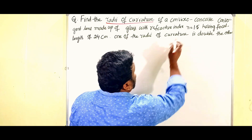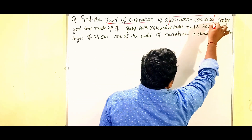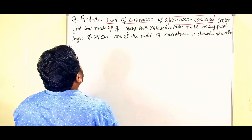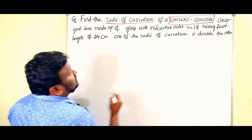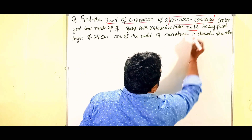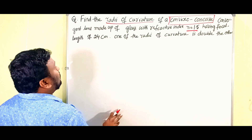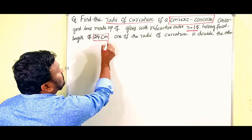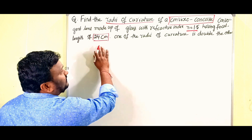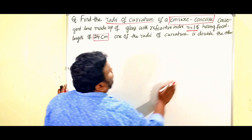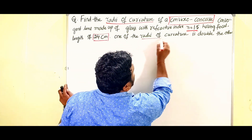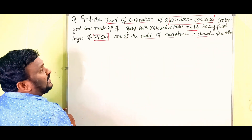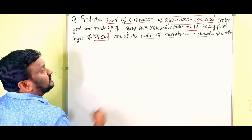The lens is a convex-concave convergent lens made up of glass with refractive index n = 1.5, having focal length of 24 centimeters. The condition given is: one of the radii of curvature is double the other.